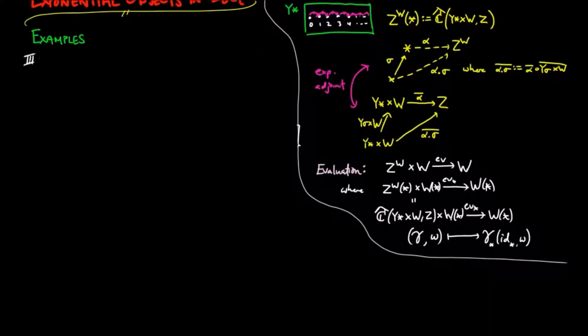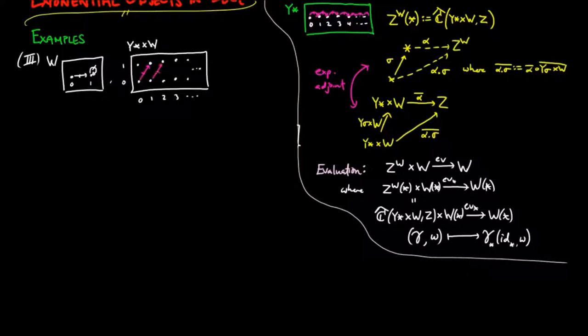Next, let W be an evolving set with two figures and a process which takes 0 to 1 and fixes 1. Then the product is as follows where each figure in the 0 row is taken to the 1 row and the 1 row moves sequentially to the right.